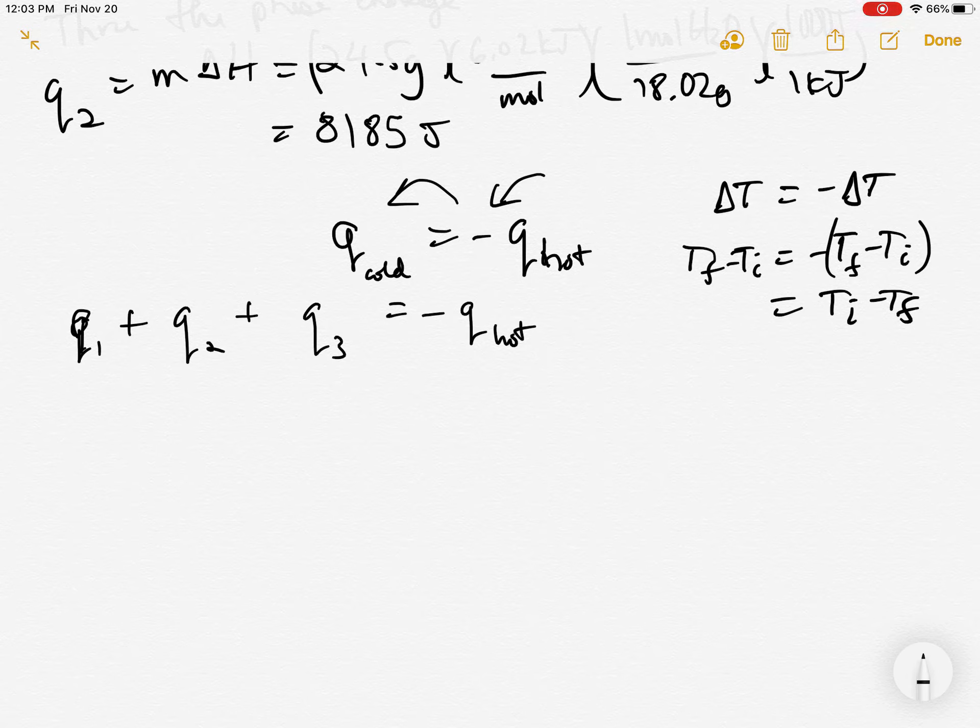So now we've got to figure out this is where our final temperature is going to end up. So now we know this is 586 joules plus 8185 joules. Plus we're going to warm up the water. Anytime you warm up water or cool it down, we're going to use MC delta T. And then we're going to cool down this water MC delta T over here,